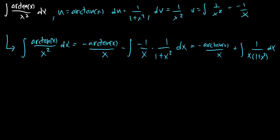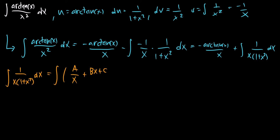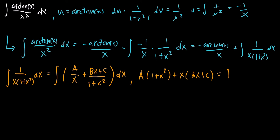Now we have to evaluate this other integral. The integral of 1 over x times 1 plus x squared dx can be written as the integral of a over x plus bx plus c over 1 plus x squared dx. We have to use partial fraction decomposition to get a like denominator, so we have a times 1 plus x squared plus x times bx plus c equals 1.